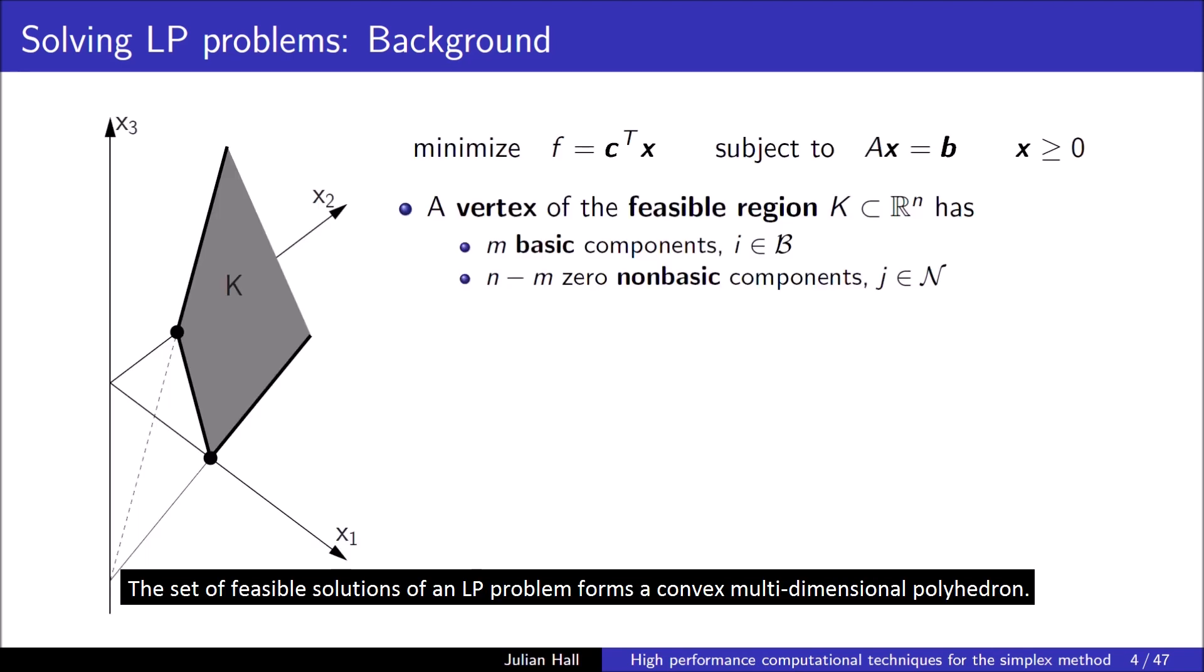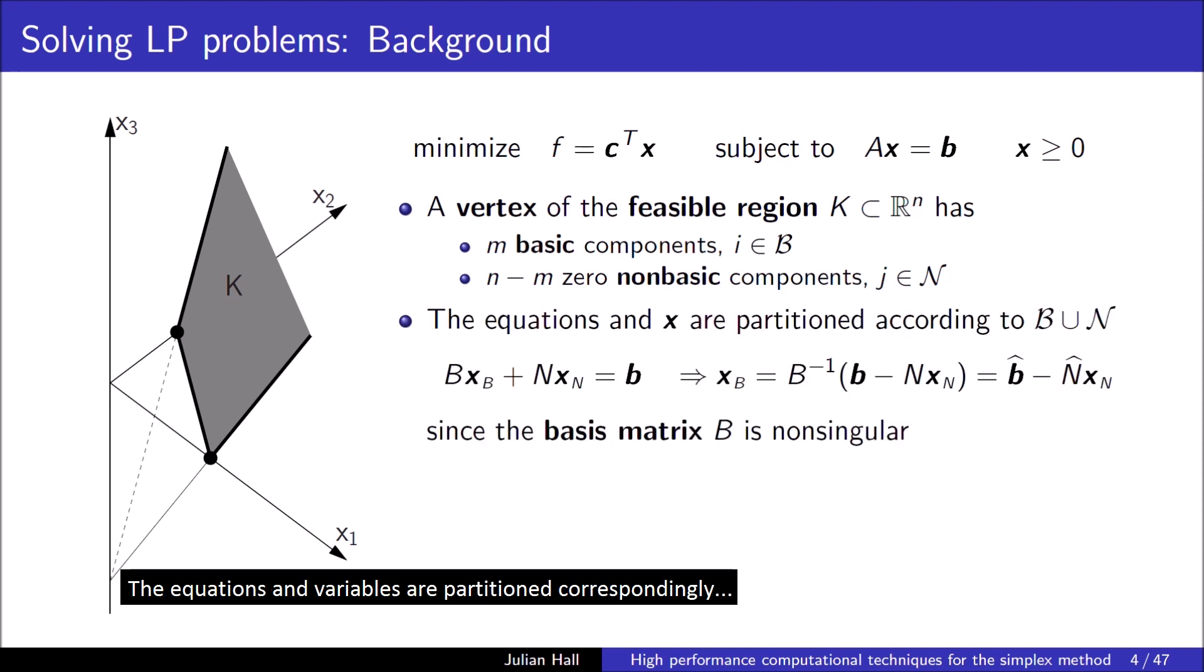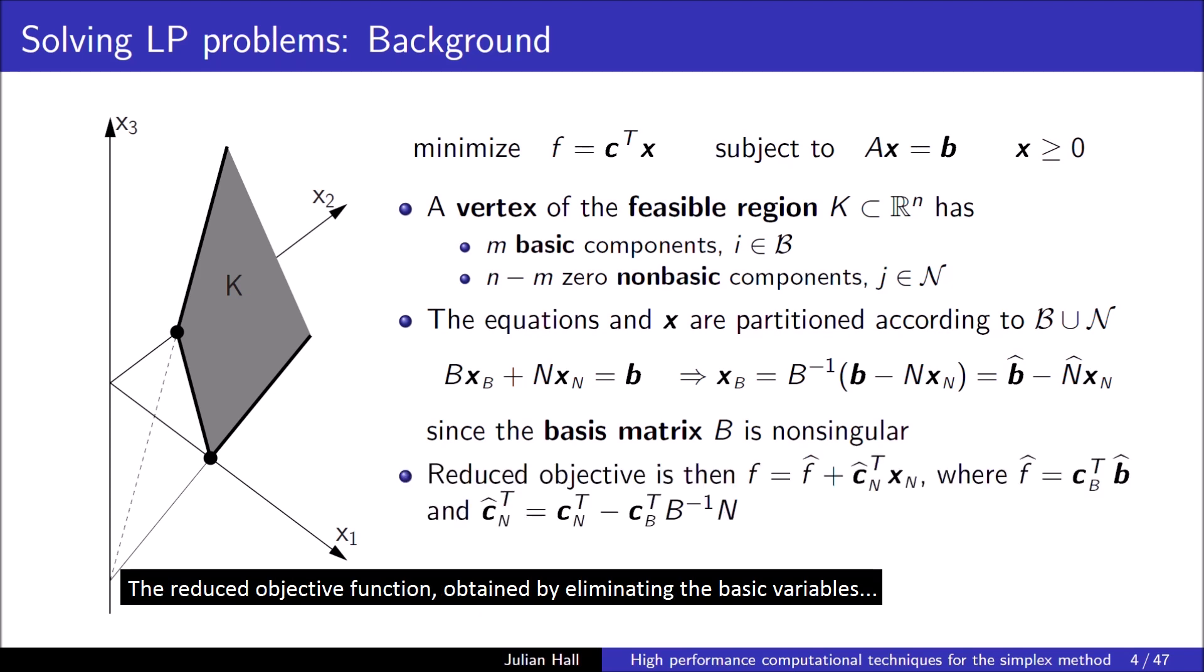The set of feasible solutions of an LP forms a convex multidimensional polyhedron. A vertex of the feasible region is partitioned into M basic components and N minus M non-basic components. The equations and variables are partitioned correspondingly, allowing the basic variables to be expressed in terms of the non-basic variables. The reduced objective function, obtained by eliminating the basic variables, is given by the objective value at the vertex, F hat, and the reduced costs, CN hat.